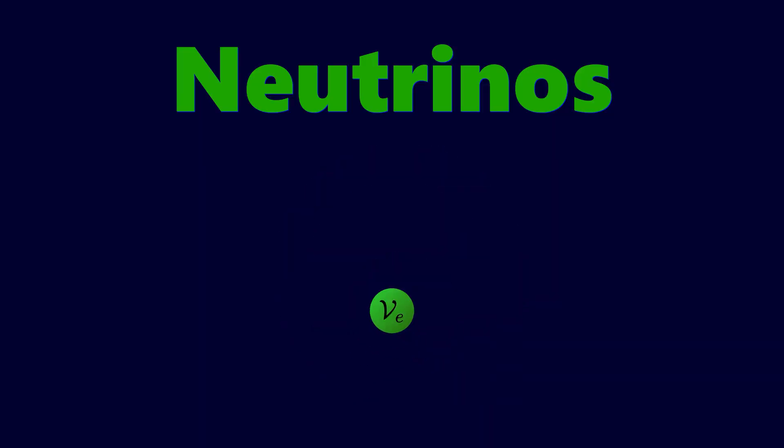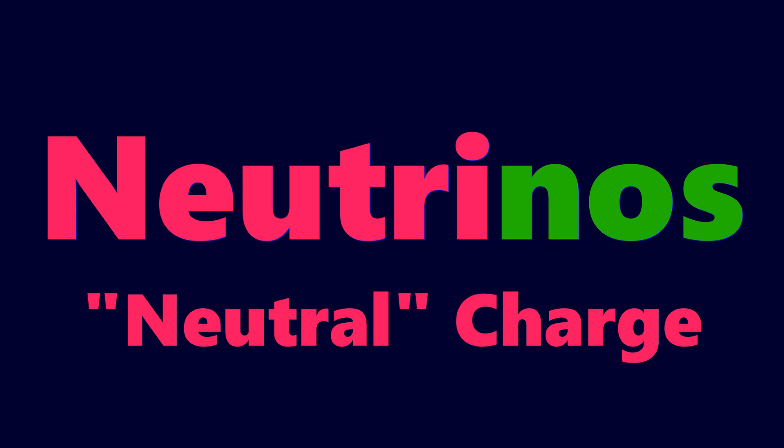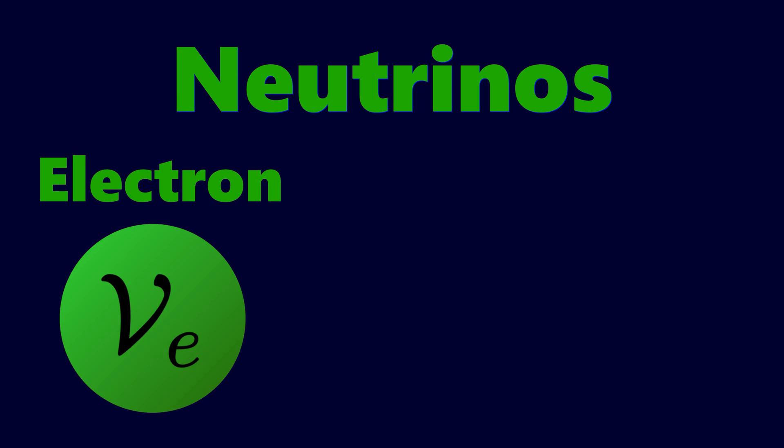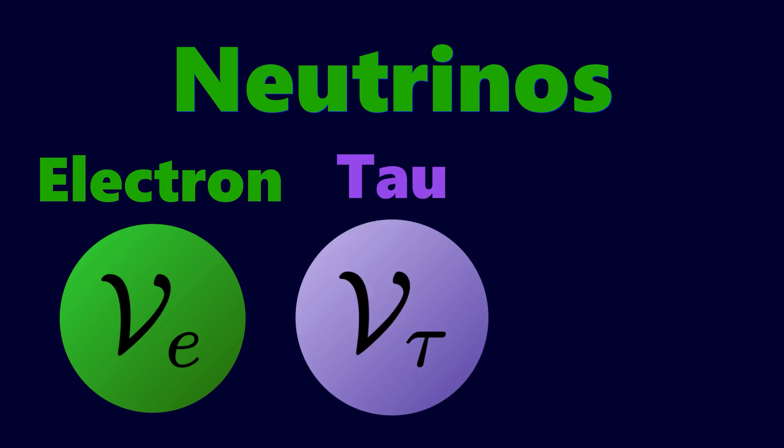Neutrinos are very, very small particles with no electric charge. There are three kinds, or flavors, of neutrinos: the electron neutrino, the tau neutrino, and the muon neutrino.